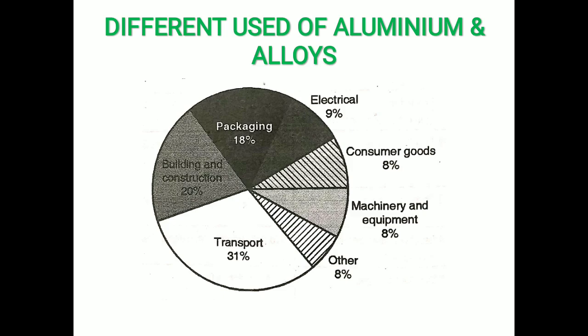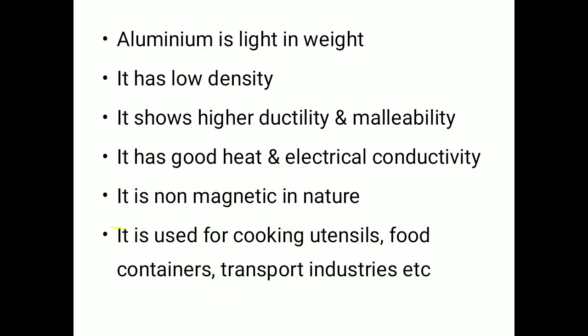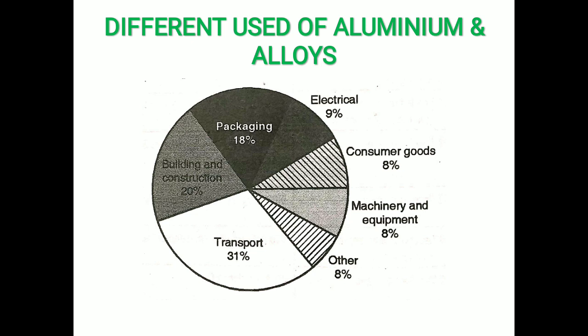Different uses of aluminium and its alloys by sector: in the packing sector 18% of aluminium is used, in the electrical sector 9%, in consumer goods 8%, in machinery and instruments 8%, in transport industry 31%, and in building and construction 20% of aluminium and its alloys are used.